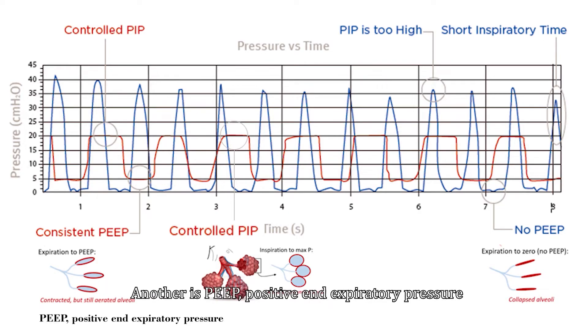Another is PEEP, positive end expiratory pressure, which is used to prevent alveoli from collapsing during expiration.